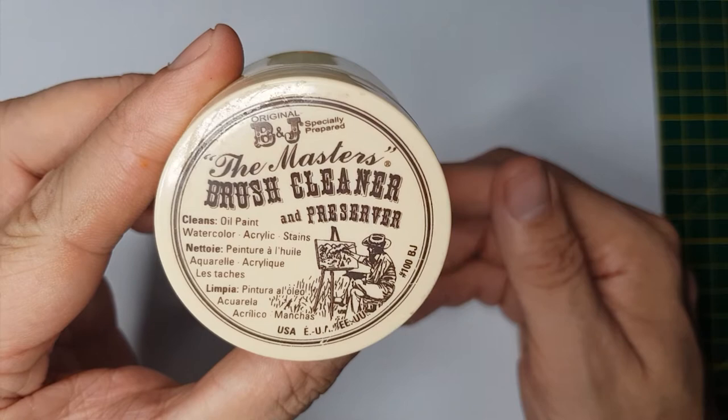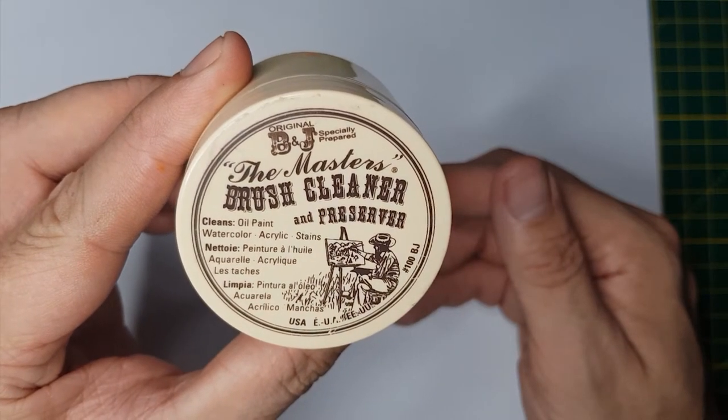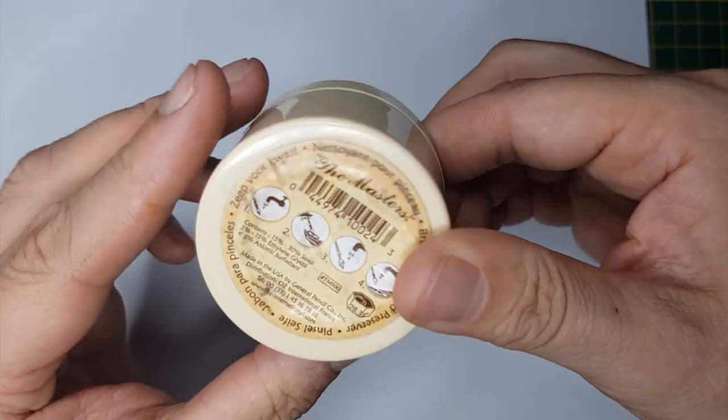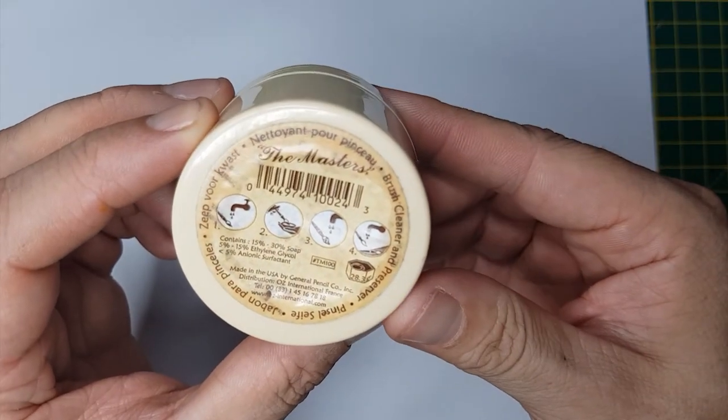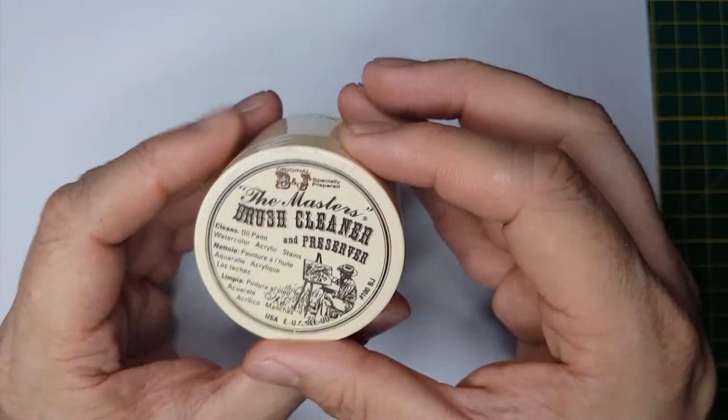So this is the main product that we're going to be using today, the Master's Brush Cleaner and Preserver, made by the General Pencil Company in America. This is the one ounce version. Links to get some in the description below.